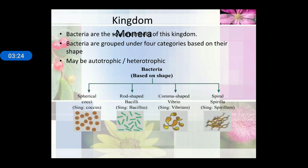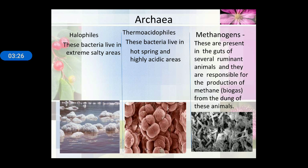Kingdom Monera may be autotrophic or heterotrophic. Kingdom Monera is divided into archibacteria and eubacteria. Archibacteria are the ancient bacteria, further categorized into three categories: halophiles, thermoacidophiles, and methanogens. Halophiles live in extreme salty areas. Thermoacidophiles live in hot springs and highly acidic areas. Methanogens are present in several ruminant animals and are responsible for the production of methane or biogas.